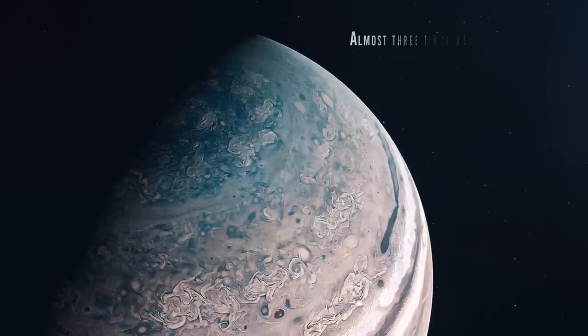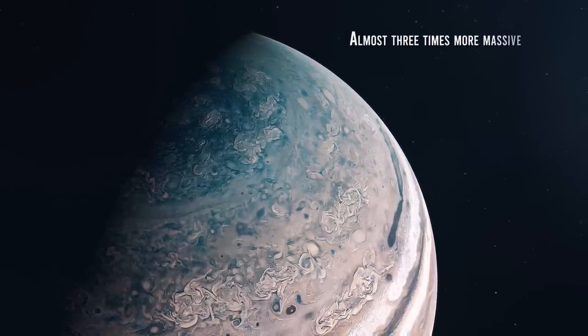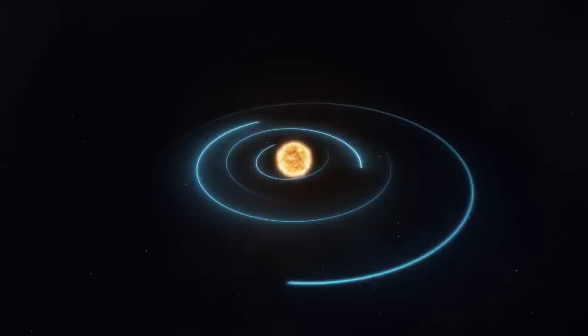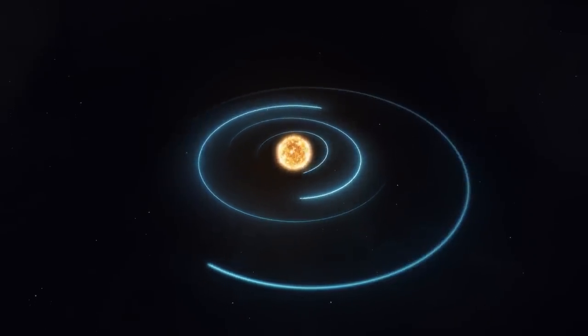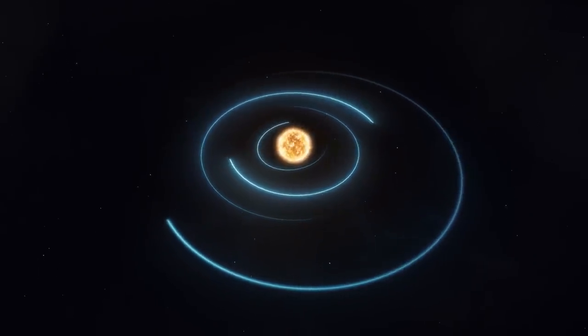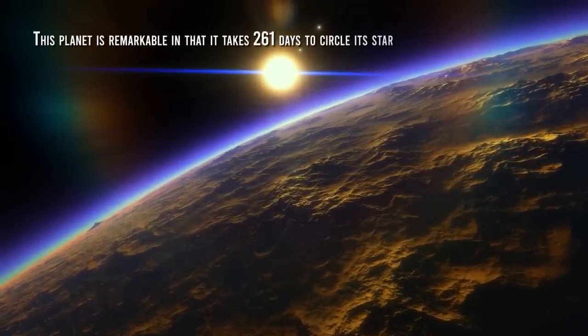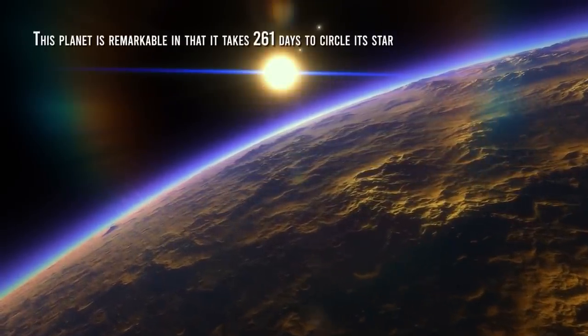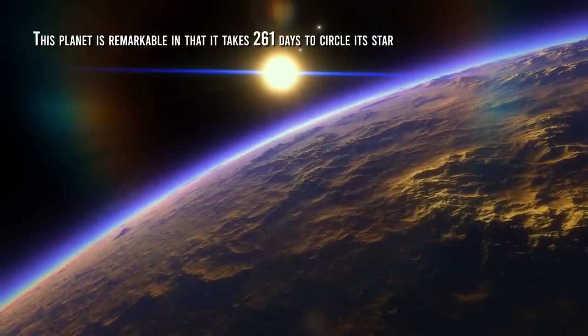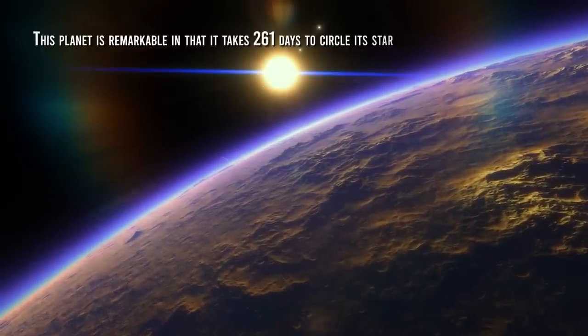The exoplanet is around the same size as Jupiter but almost three times more massive. This density differential shows that the planet developed differently from Jupiter. This planet is remarkable in that it takes 261 days to circle its star, which is far longer than the majority of distant gas giants identified to date.